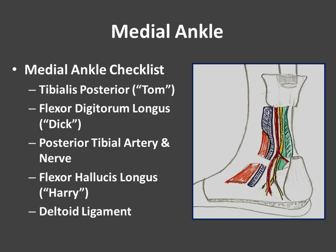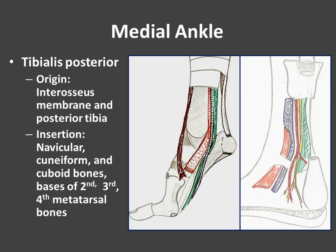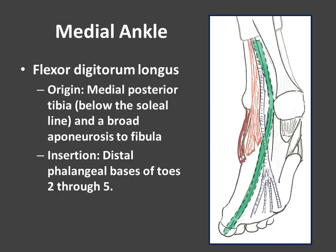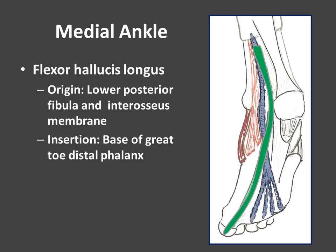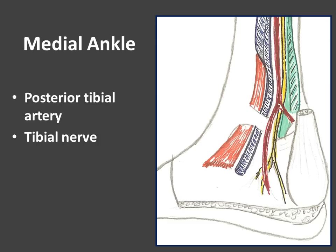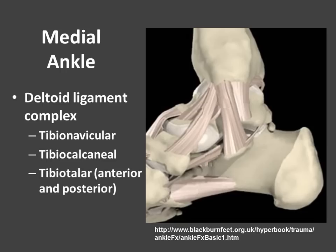Moving on to the medial ankle. The checklist includes the flexor tendons as well as the neurovascular bundle. For the flexor tendons we're talking about tibialis posterior, flexor digitorum longus, and flexor hallucis — or Tom, Dick, and Harry — and we also discuss the deltoid ligament. Tibialis posterior originates from the interosseous membrane and posterior tibia to insert on the navicular, cuneiform, cuboid bones, and bases of the second, third, and fourth metatarsal bones. Flexor digitorum longus originates from the medial posterior tibia to insert on the distal phalangeal bases of the second through fifth toes, crossing the flexor hallucis. Flexor hallucis originates from the lower posterior fibula and interosseous membrane to insert on the base of the great toe distal phalanx. Between the flexor digitorum and flexor hallucis, we have our posterior tibial artery and tibial nerve.